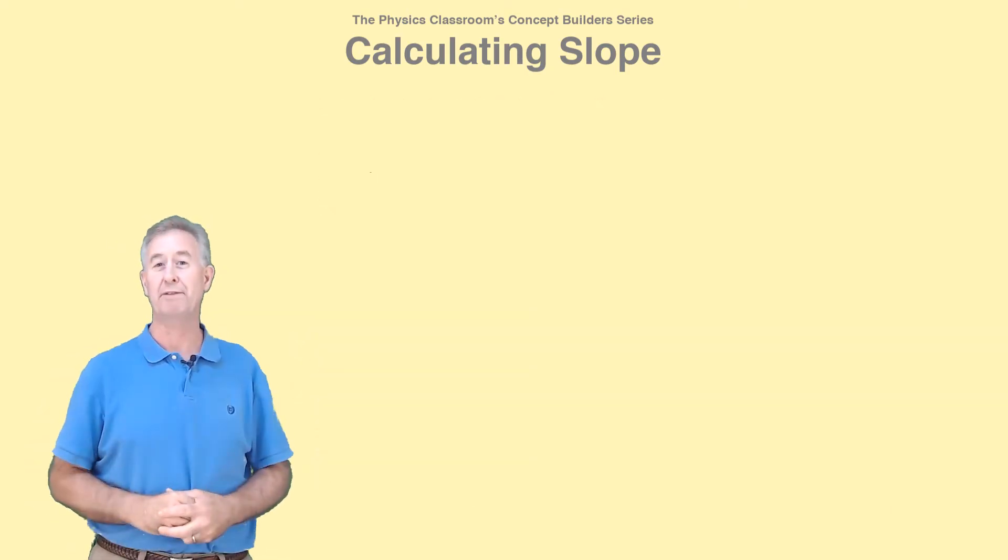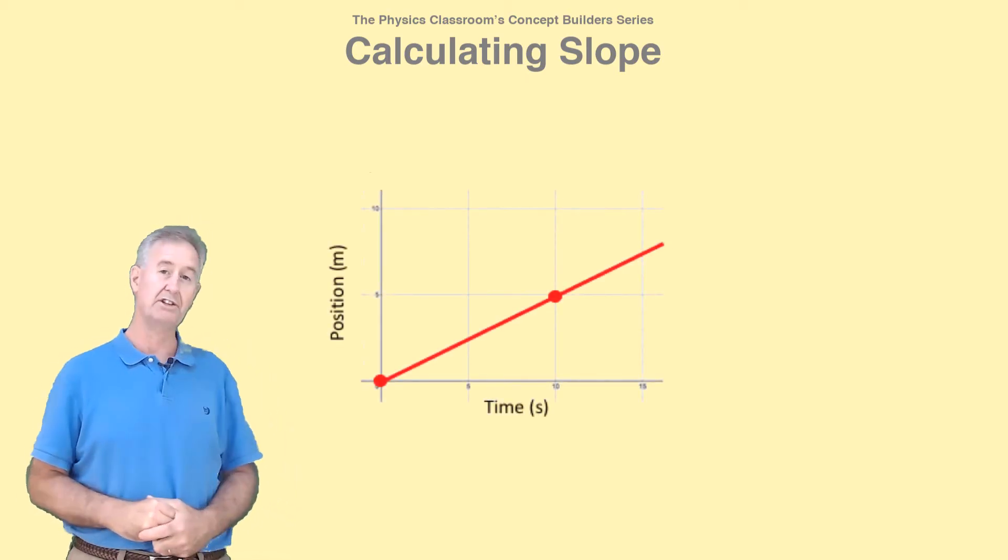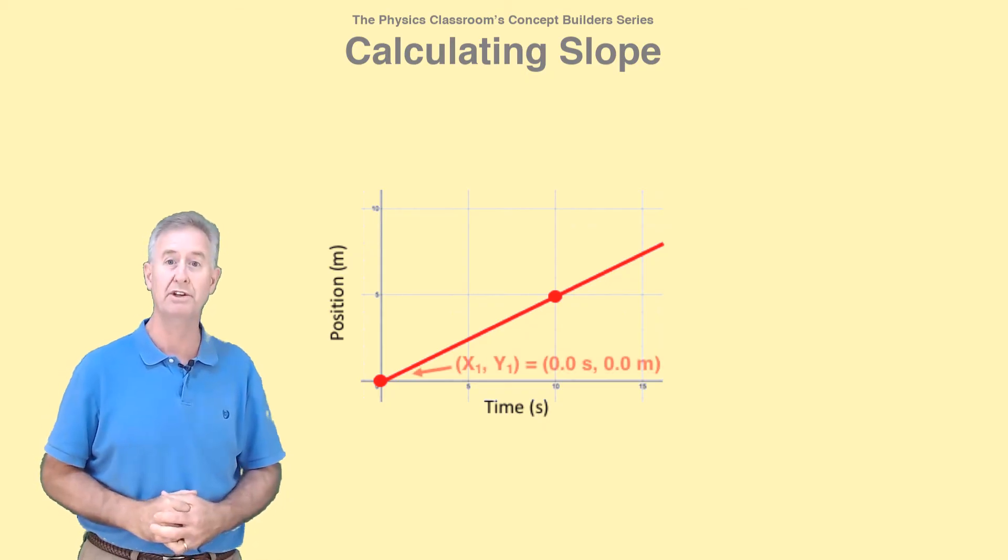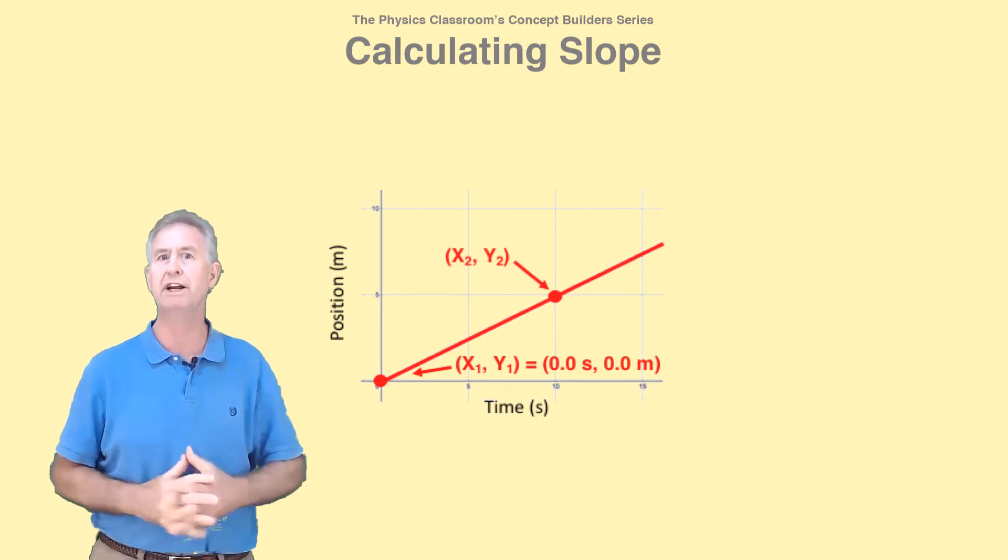I have two warnings for you, two things to be careful about. And the first has to do with graphs like this, that pass through the origin. Pick the origin as one of your points. That is, x1 comma y1 equals 0 seconds comma 0 meters. This simplifies the math.